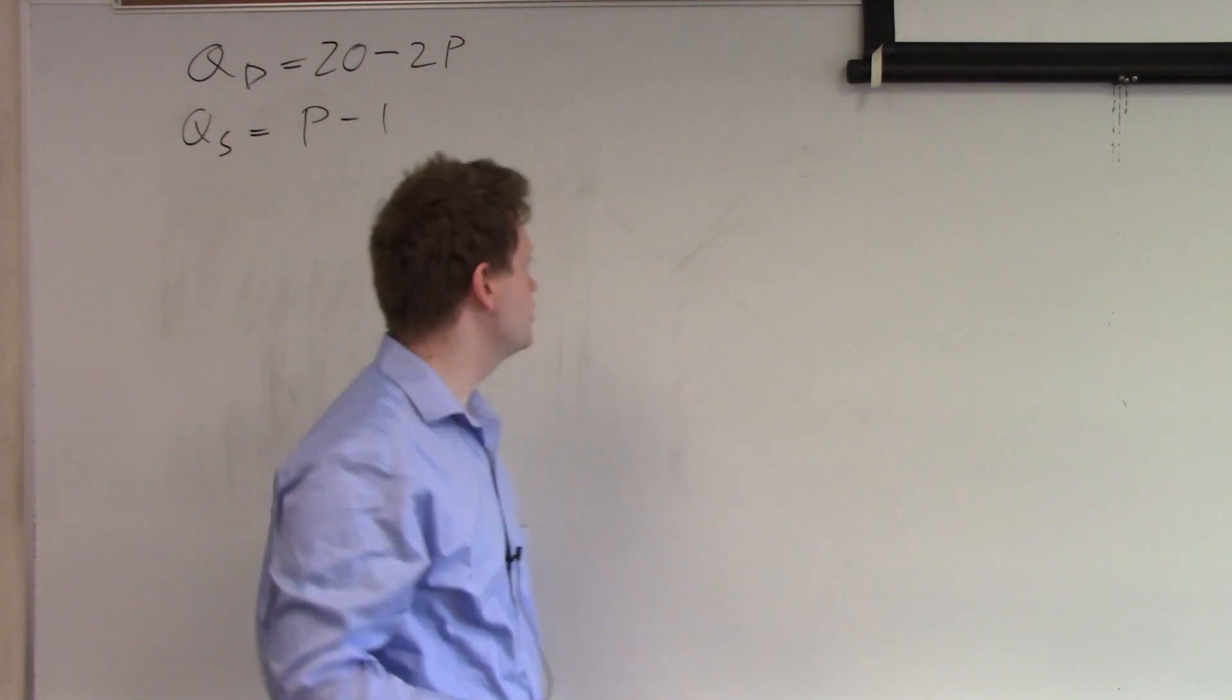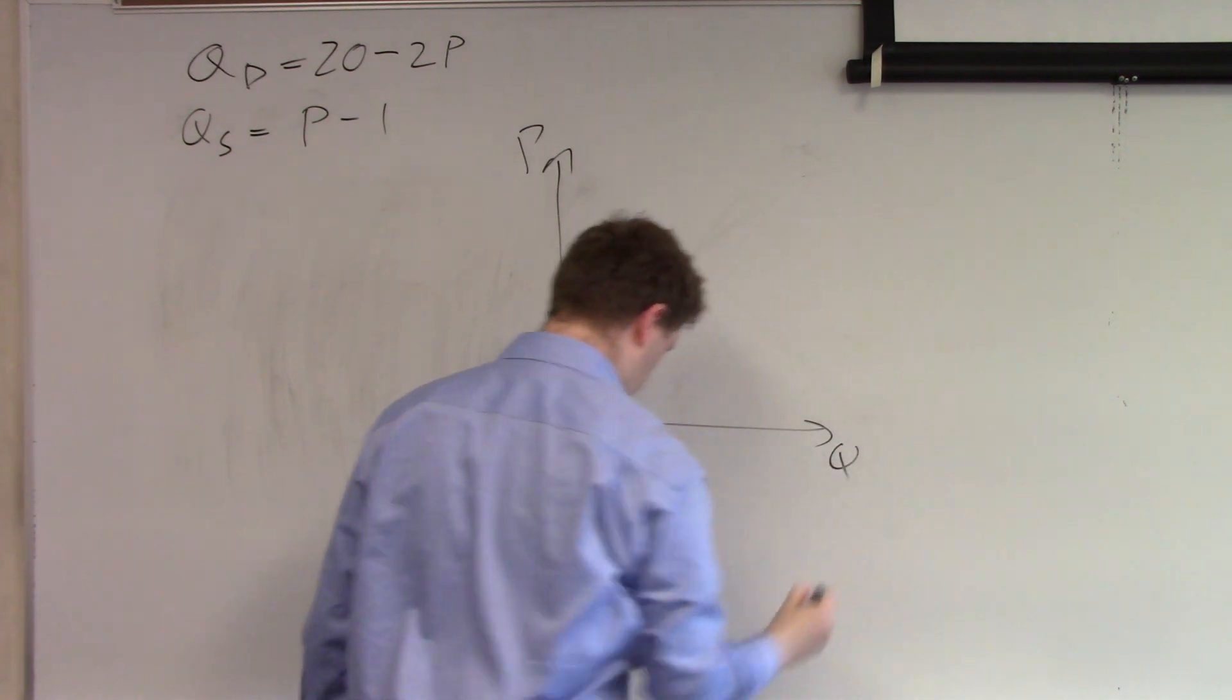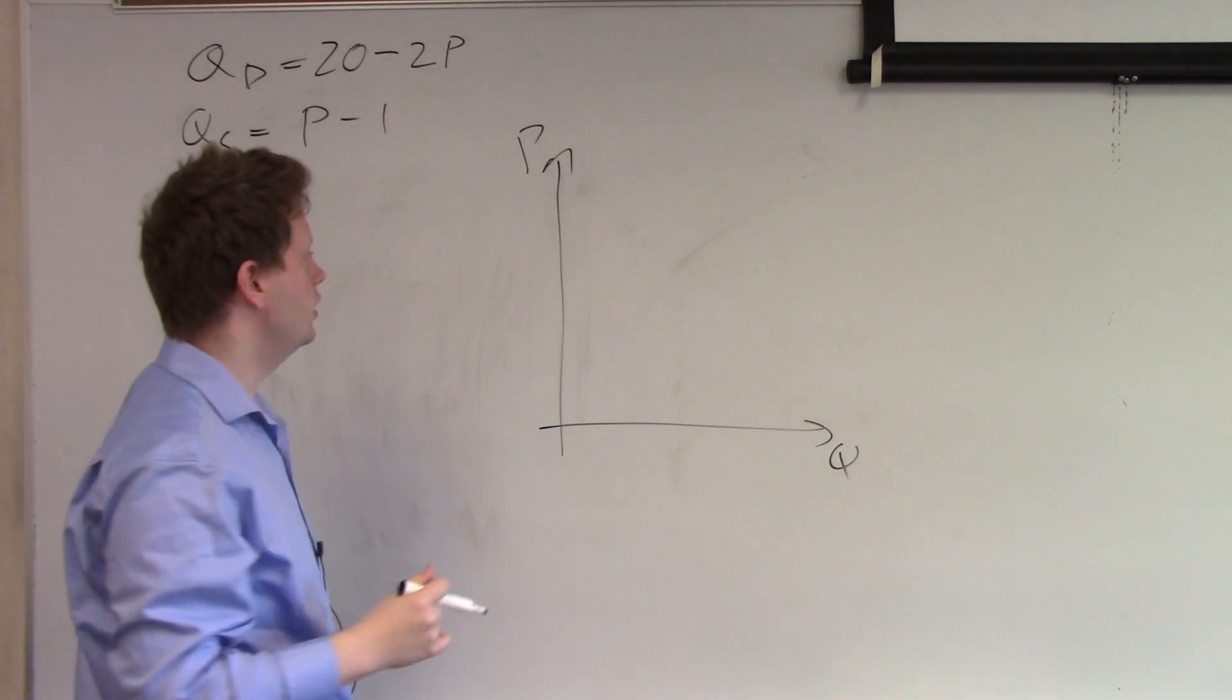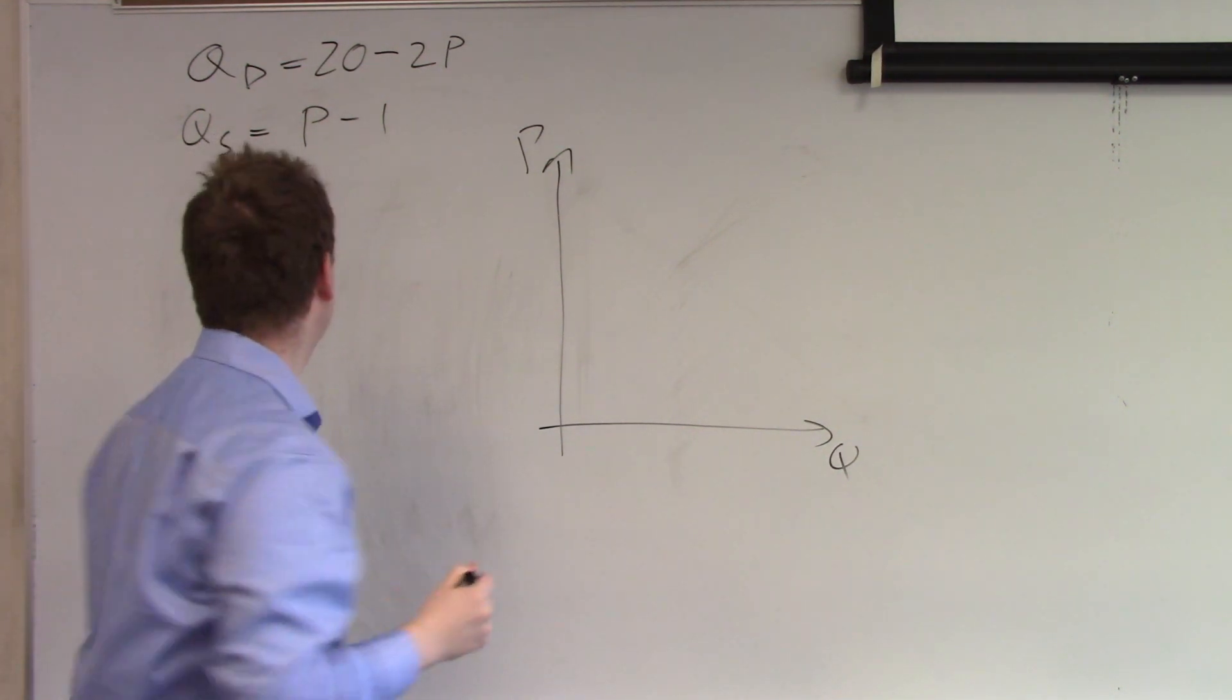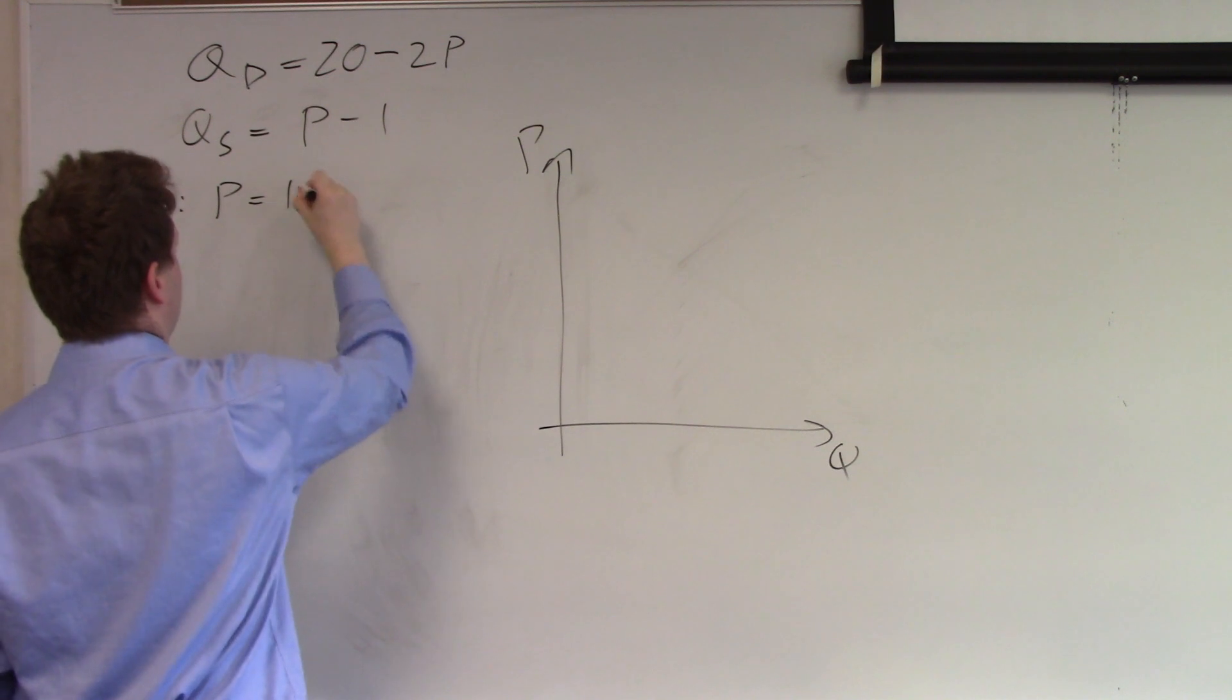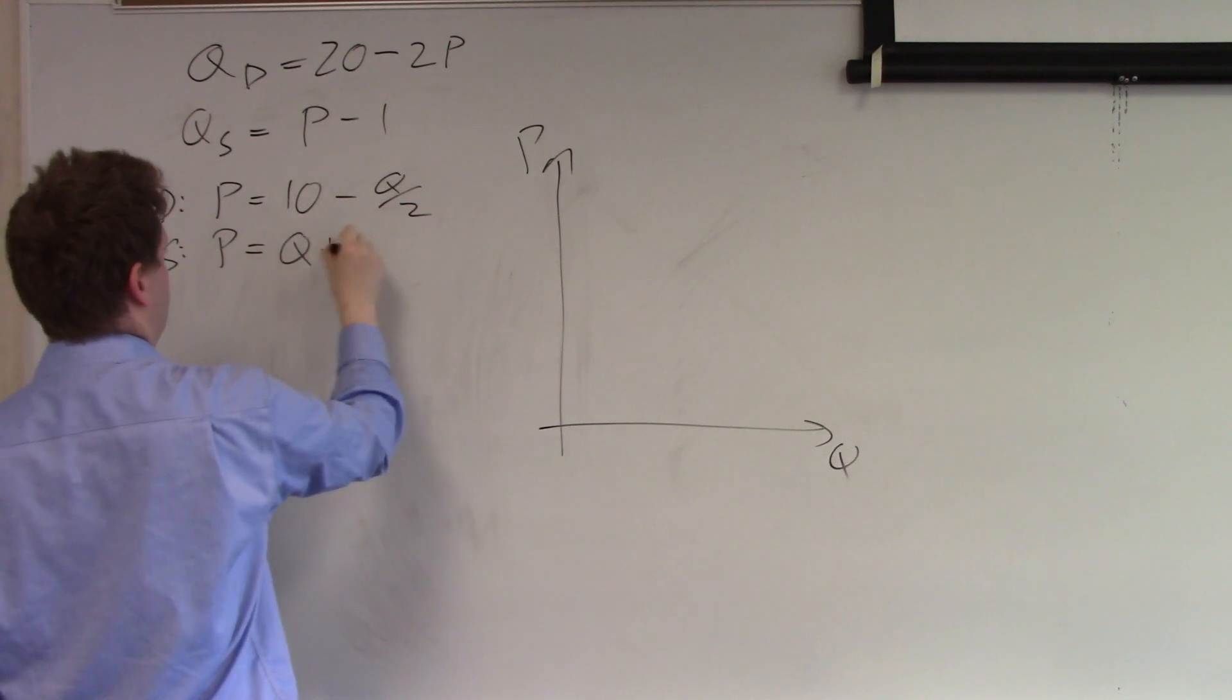If we take those numbers we can draw this problem, P and Q. We now need to see where the intercept of these curves is and where the equilibrium is. So if we flip these curves around we get for demand P equals 10 minus Q over 2 and for supply P equals Q plus 1.